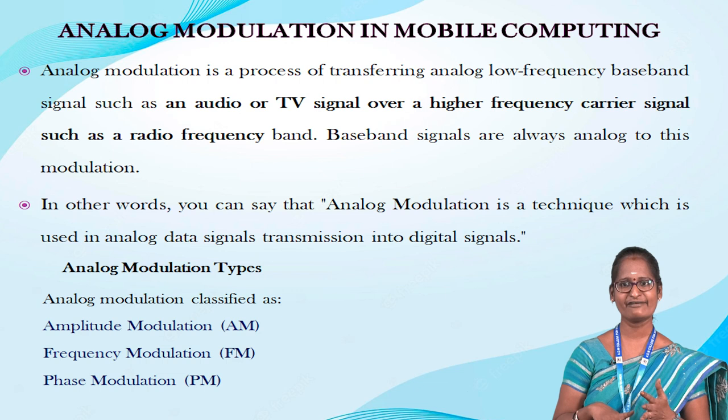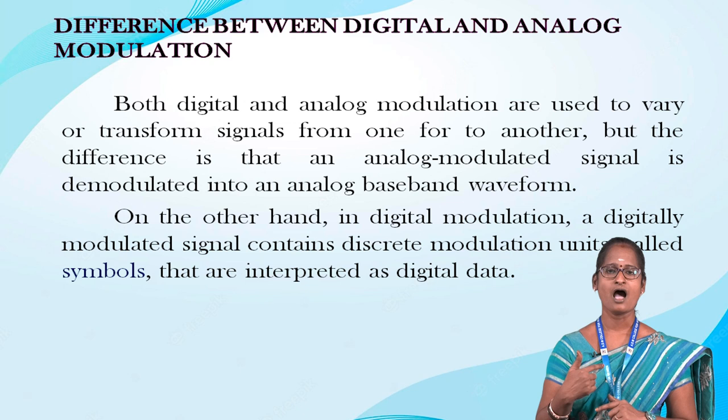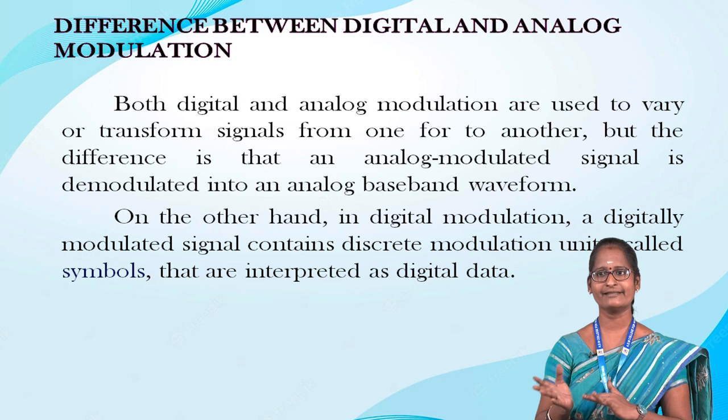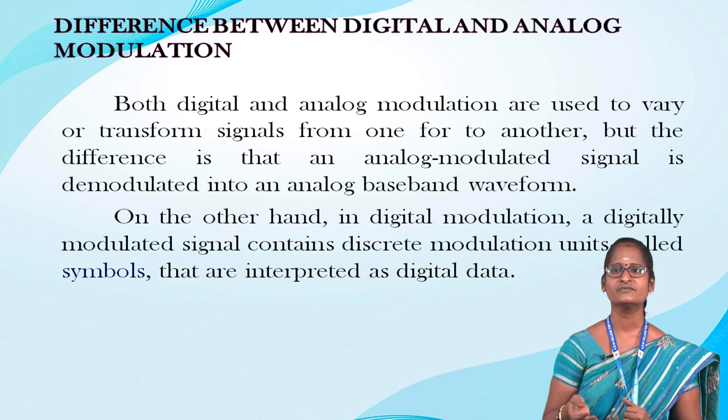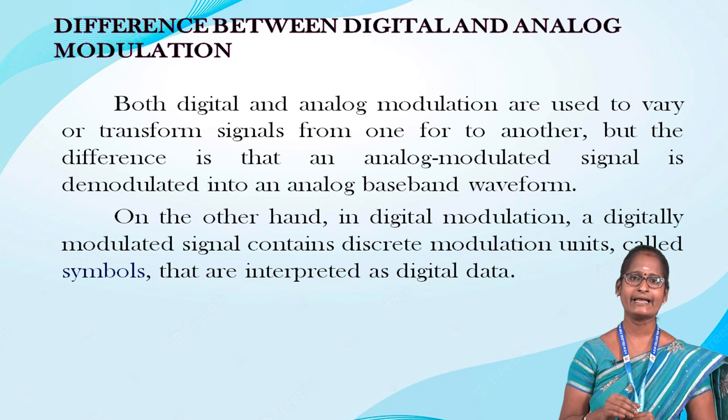The difference between digital and analog modulation: both digital and analog modulation are used to vary or transform signals from one form to another. The difference is that an analog modulated signal is demodulated into an analog baseband waveform. On the other hand, in digital modulation, the digital modulated signal contains discrete modulation units called symbols that are interpreted as digital data.